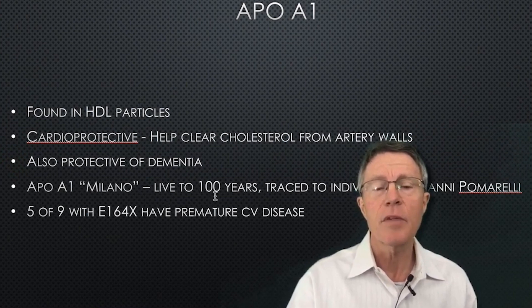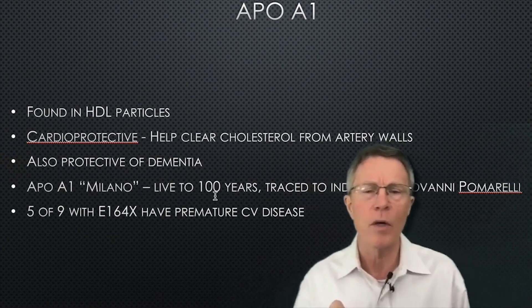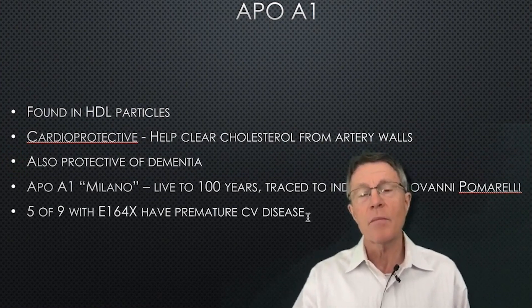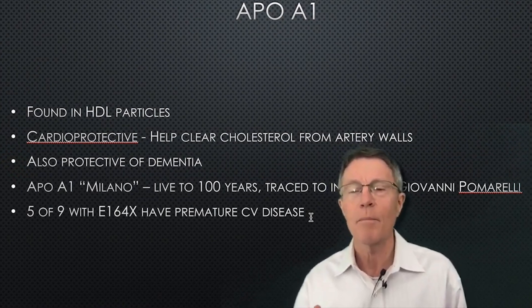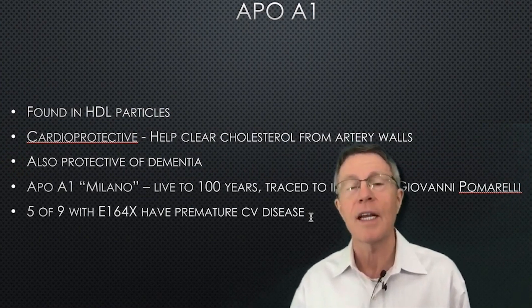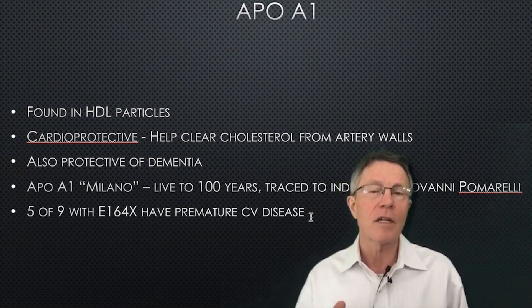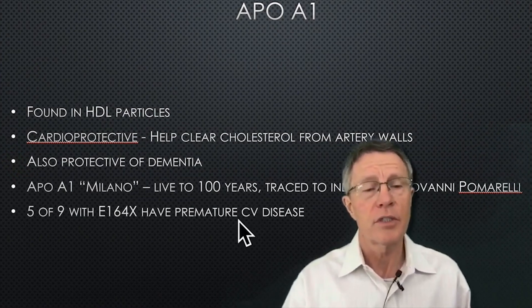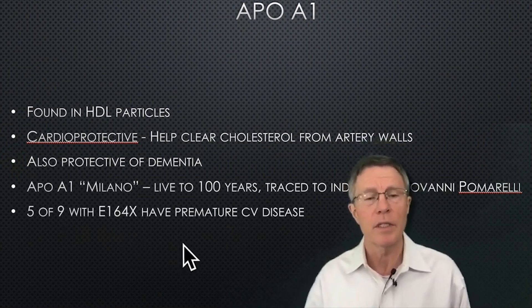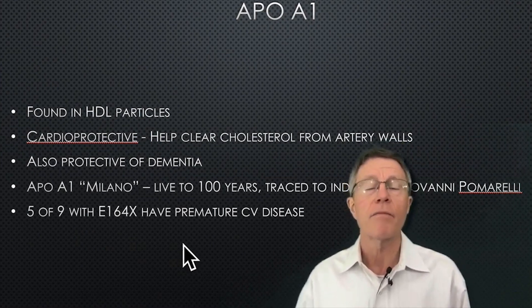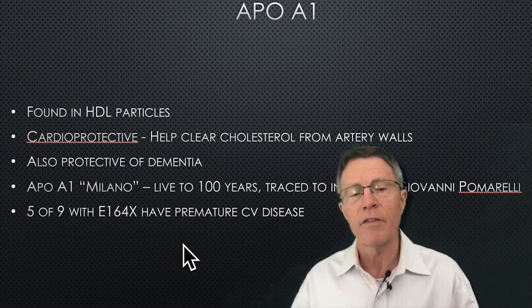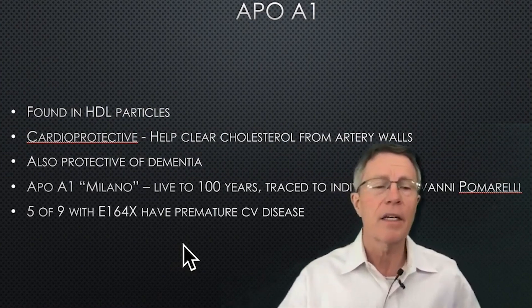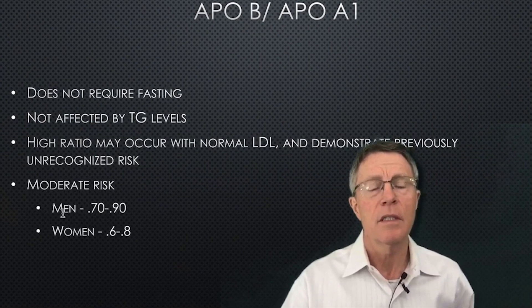ApoA1 Milano is a variant discovered in a region of Italy near Milan, where people tended to live to 80 to 100 years. It was traced back to an individual named Giovanni Pommarelli a couple of hundred years ago — his descendants tend to have very long lives, reinforcing how important HDL is to longevity. Conversely, a variant called E164X of ApoA1 leads to big increases in premature cardiovascular disease, with significant plaque in arteries by the mid-30s to mid-40s.